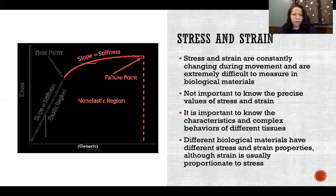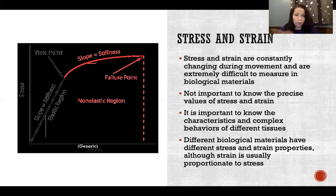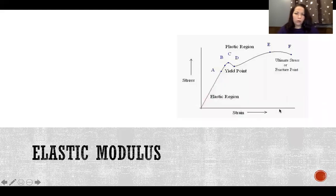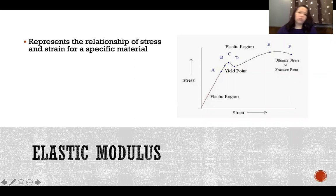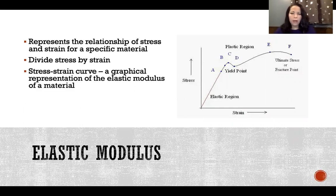In most cases, and especially in the body and biological materials, stress and strain are proportionate — so as stress increases in a tissue, strain also increases. That goes for bone as well. Just because we think of bone as being very strong, it actually is more flexible than you realize; there's more compliance in bones than you'd expect. The elastic modulus represents the relationship of stress and strain for a specific material — it's stress divided by strain — and we represent the elastic modulus graphically as the stress-strain curve, which is what we see in the picture here.